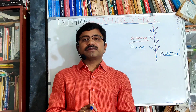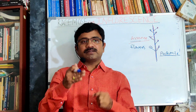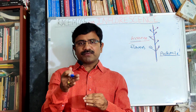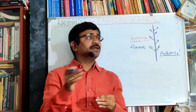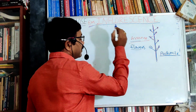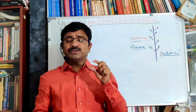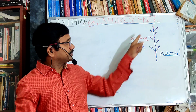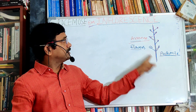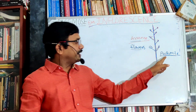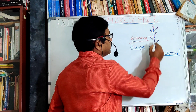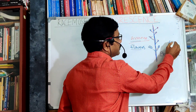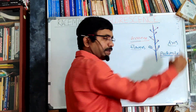The flower is the modified shoot that helps in reproduction. The arrangement of flowers on the peduncle is known as inflorescence. The peduncle is defined as the axis which bears flowers.